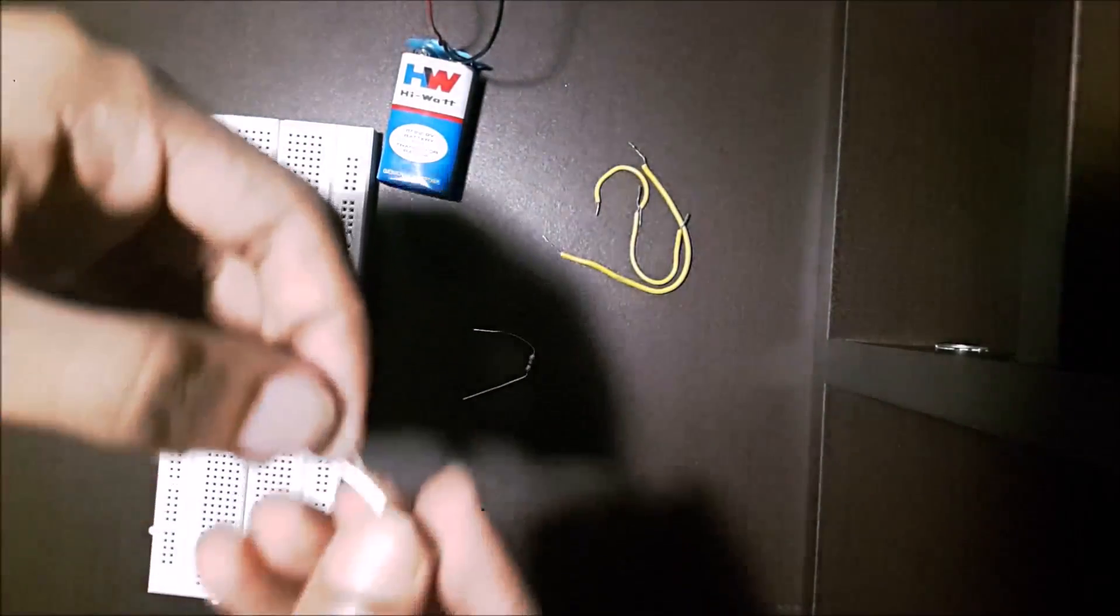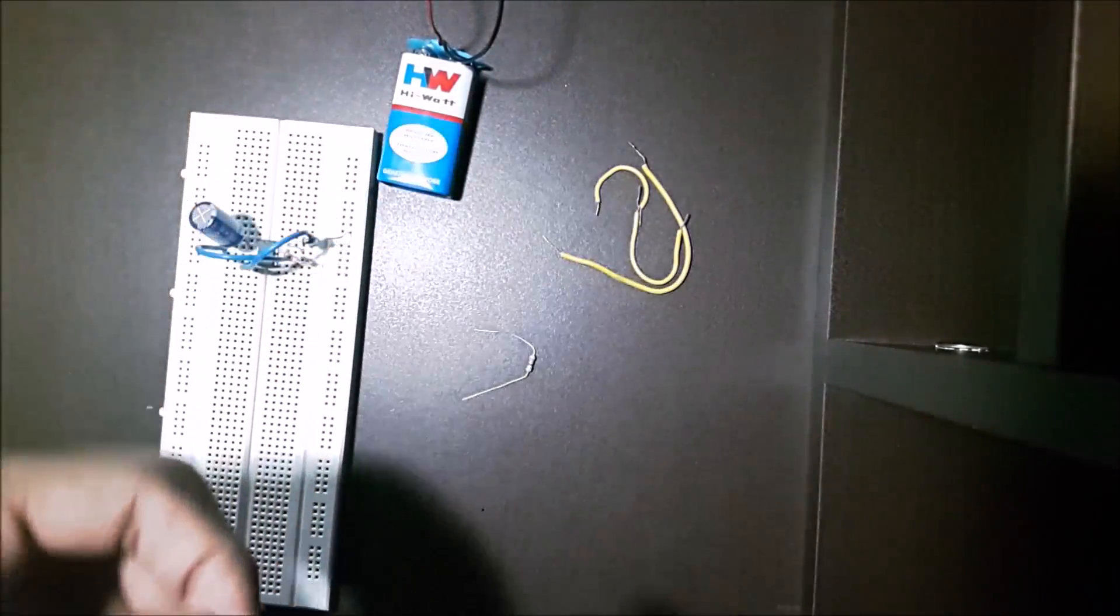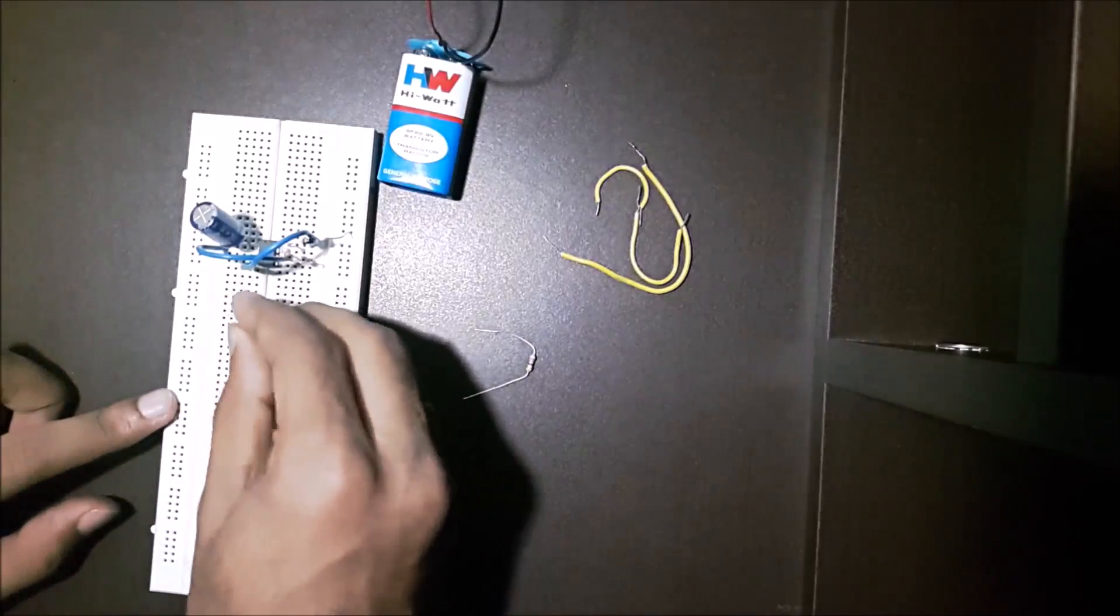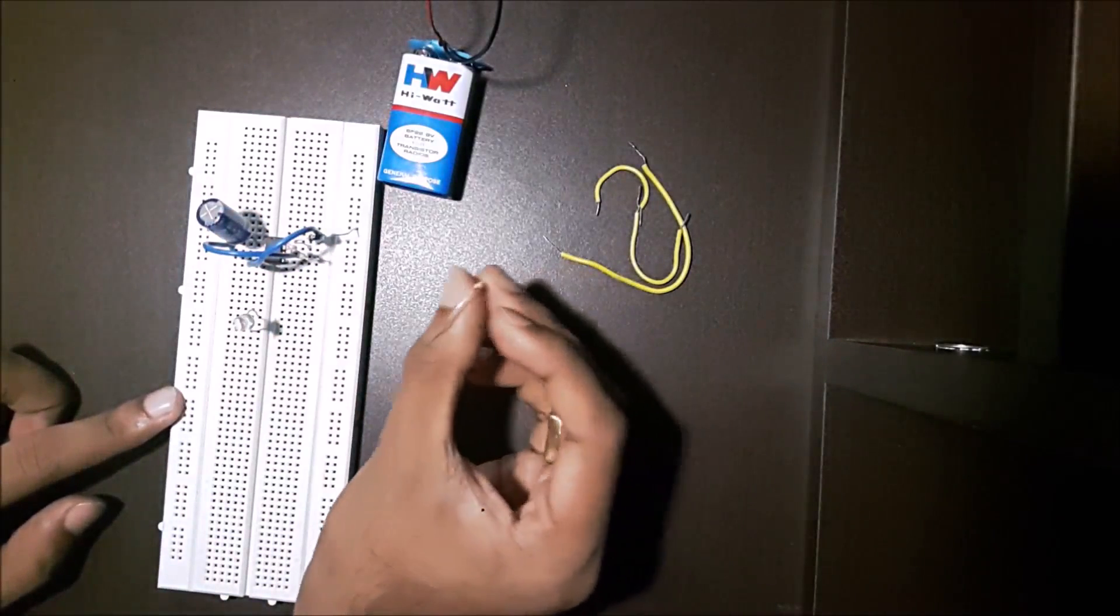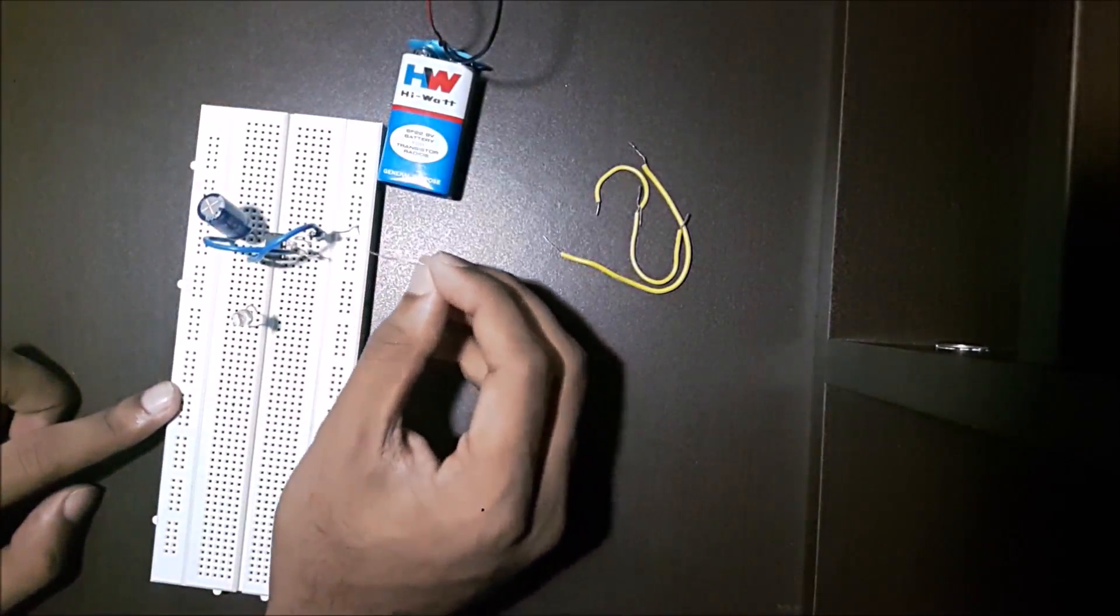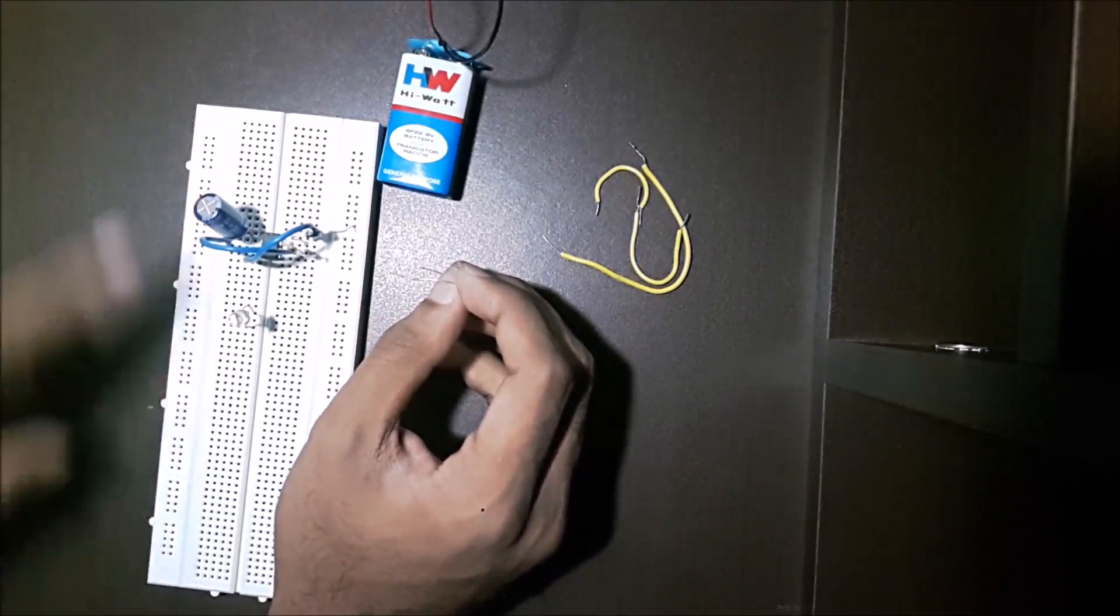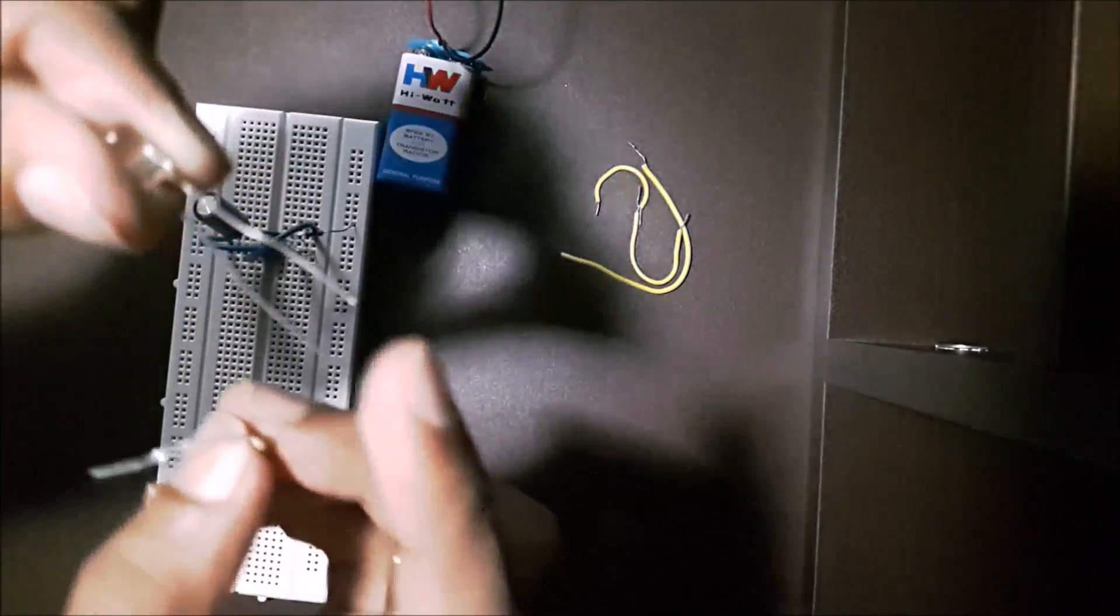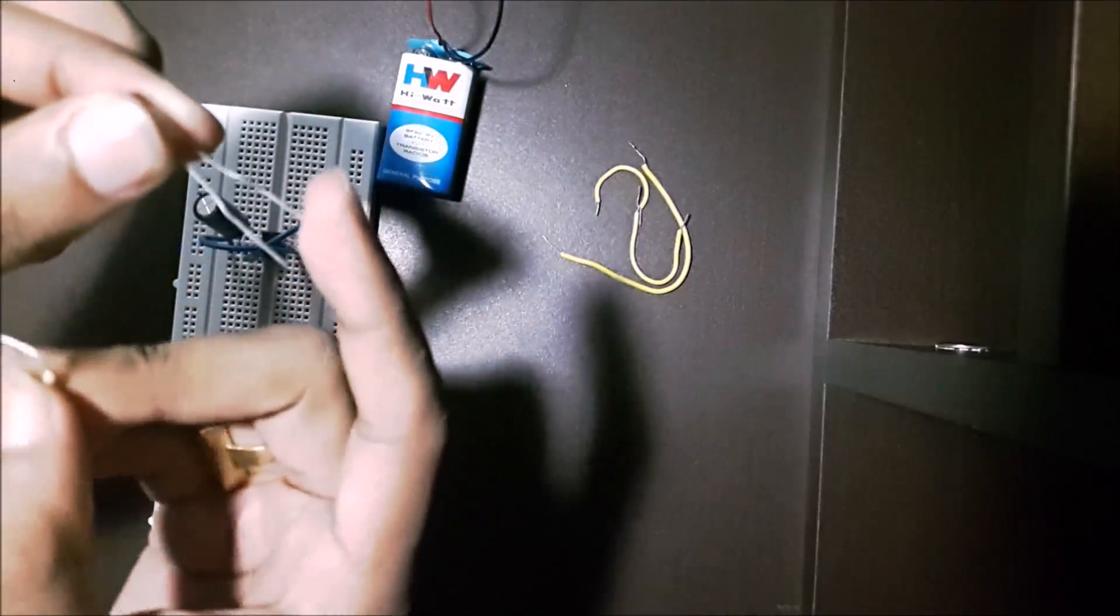Now place the LED in one of the unused slots. Now put a resistor between the negative of the LED to the negative of the circuit. We will take this strip as the negative for the whole circuit. As you can see, this is the shorter leg, so this leg will be connected to the negative strip.